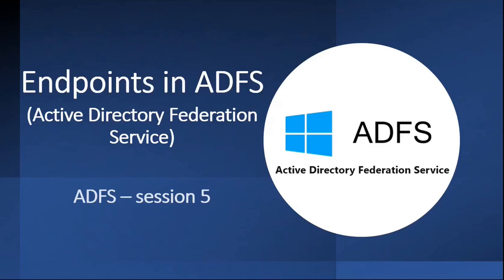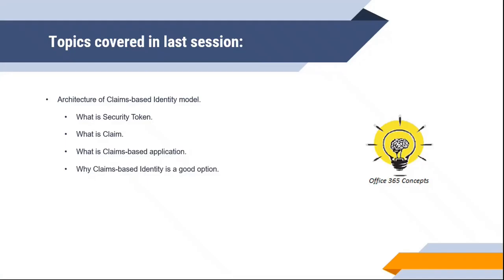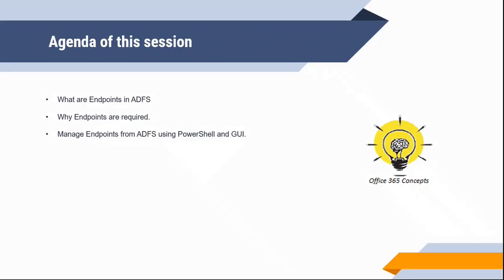Welcome to the fifth video of the series where we are talking about Active Directory Federation Services or ADFS. In the last video we discussed what is a security token, what is a claim, what is a claims-based application, and why you should choose the claims-based identity option for your organization. In this video we will be discussing what are endpoints in ADFS, different types of endpoints and their importance, and how you can manage these endpoints using PowerShell or from the ADFS Management Console.